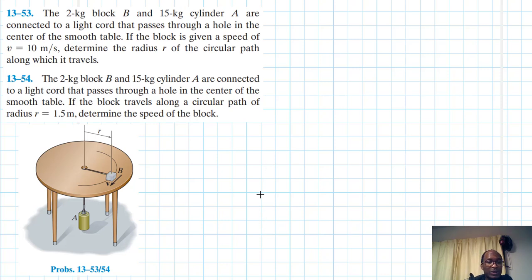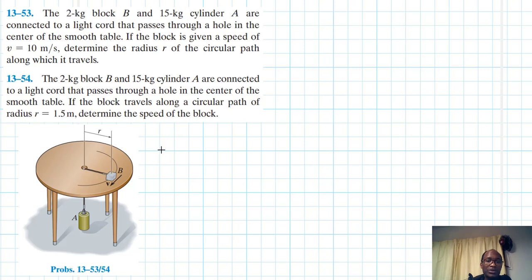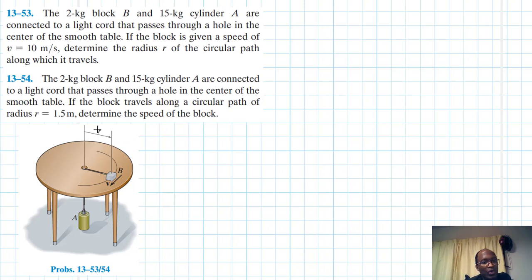Welcome to this screencast. The problem comes from Engineering Mechanics and Dynamics, 14th edition by Hibbeler. A 2 kg block B and 15 kg cylinder A are connected by a light cord that passes through a hole in the center of a smooth table. In the first problem, given a speed v = 10 m/s, determine the radius of the circular path. In the second, given a circular path radius r = 1.5 m, determine the speed of the block.